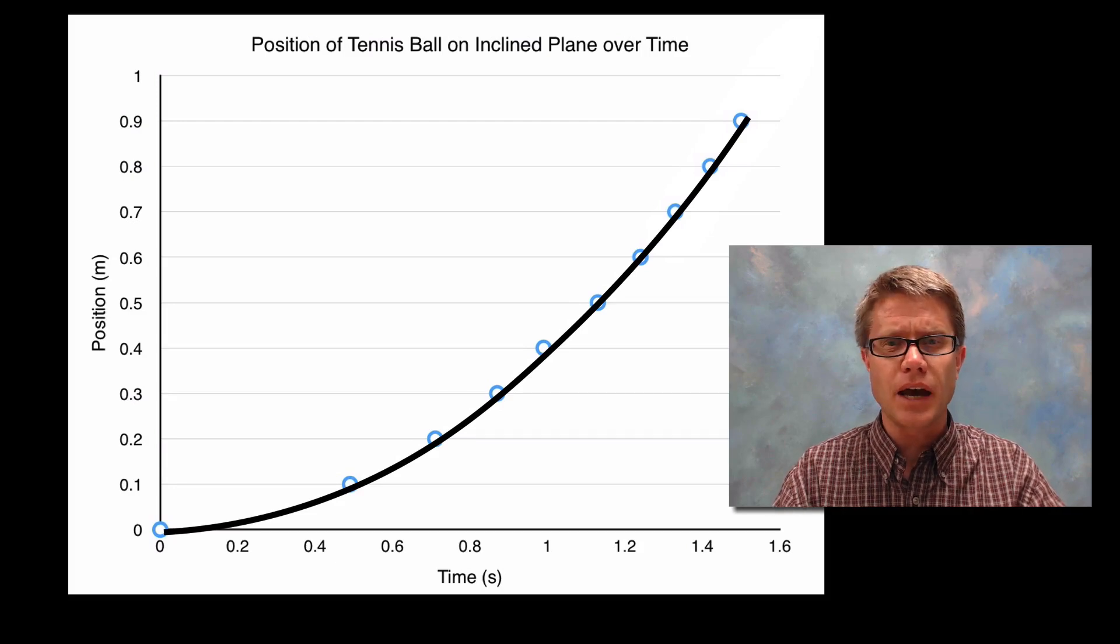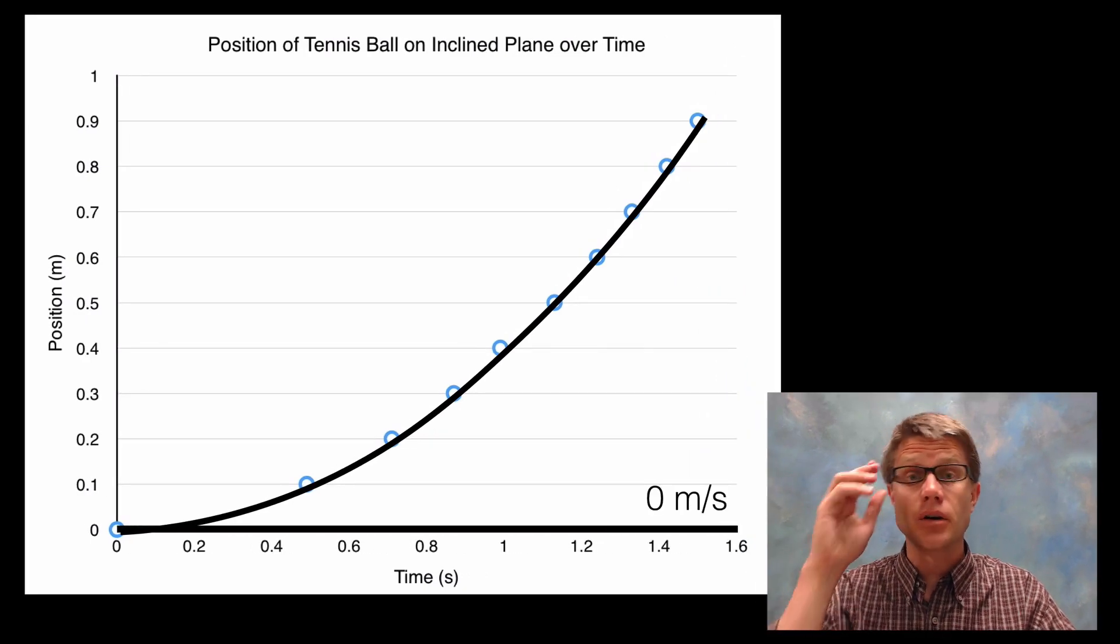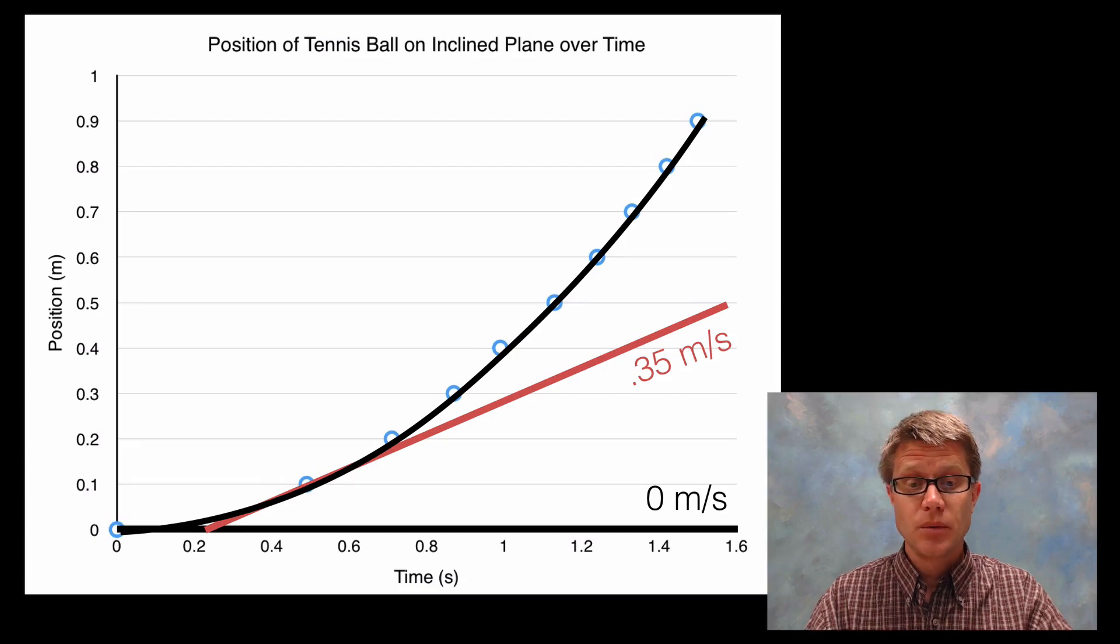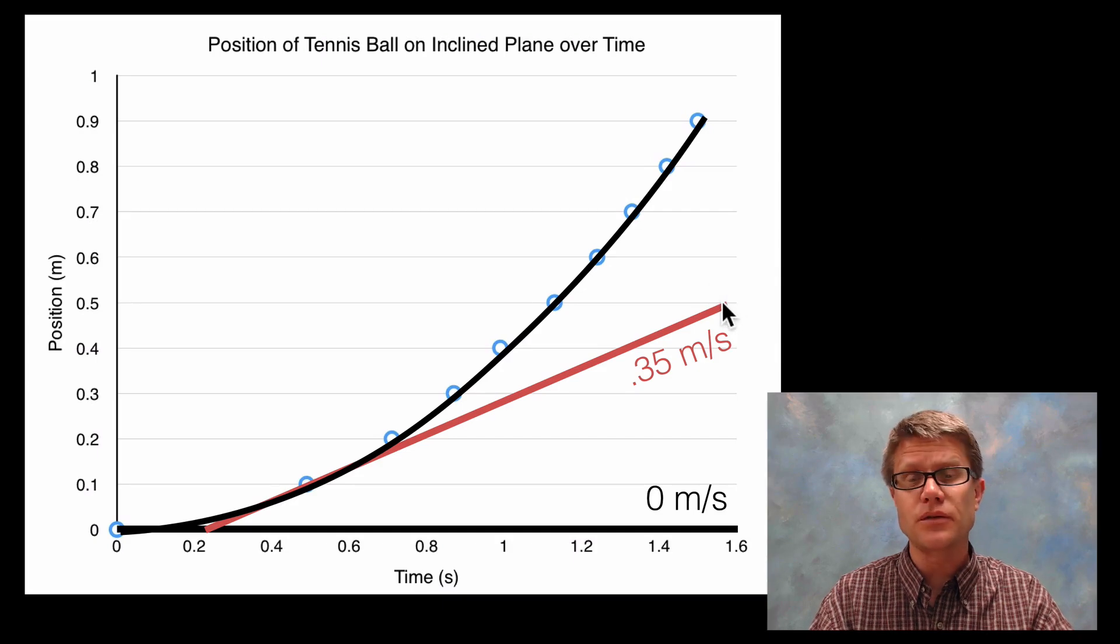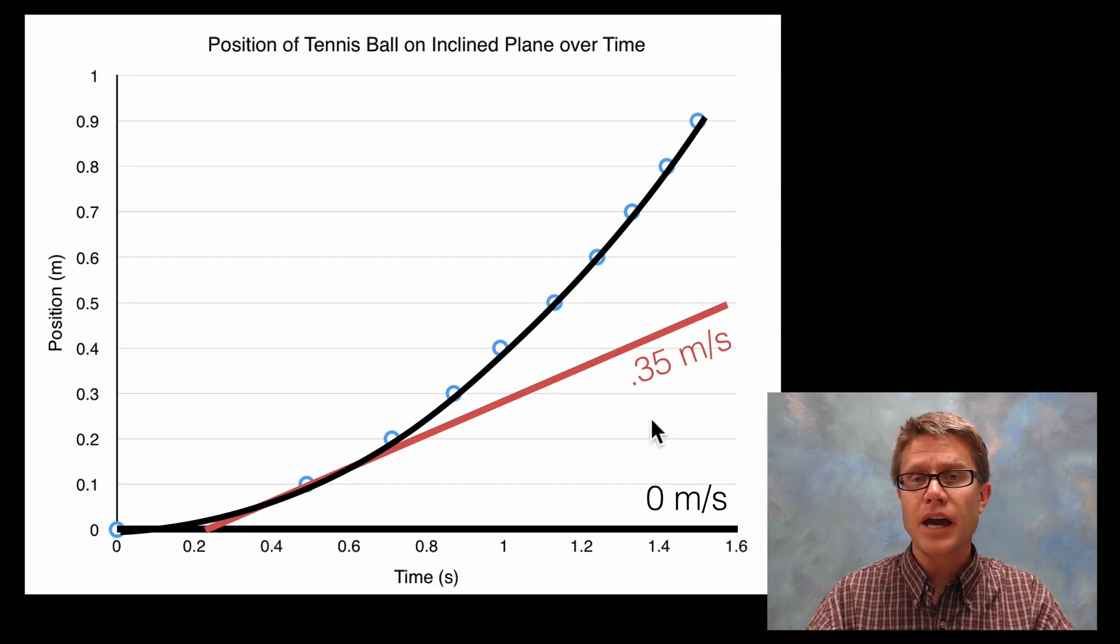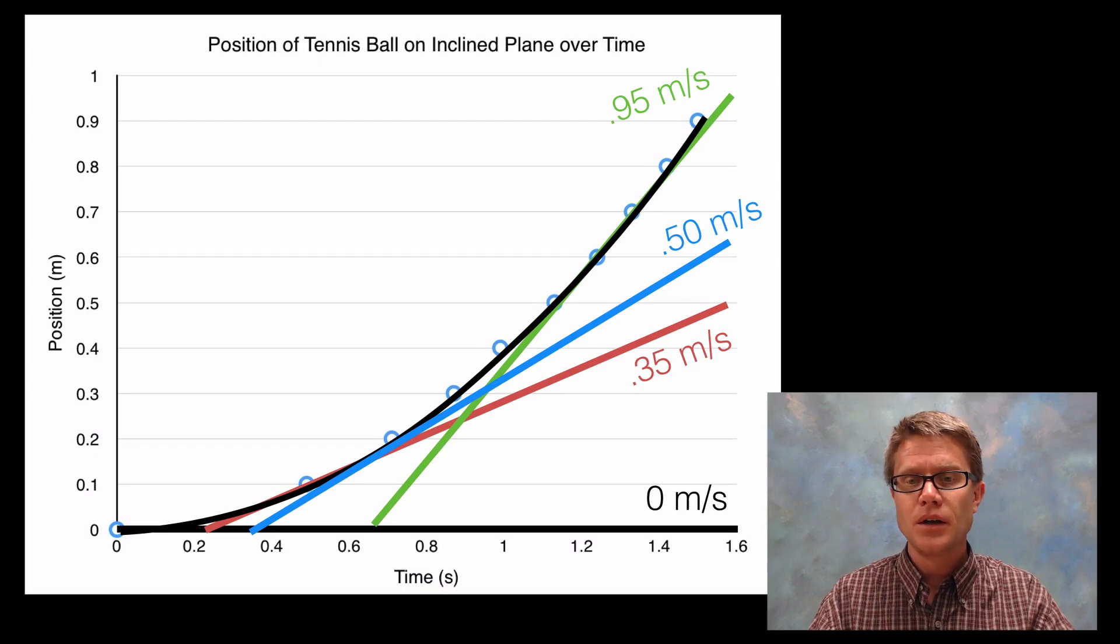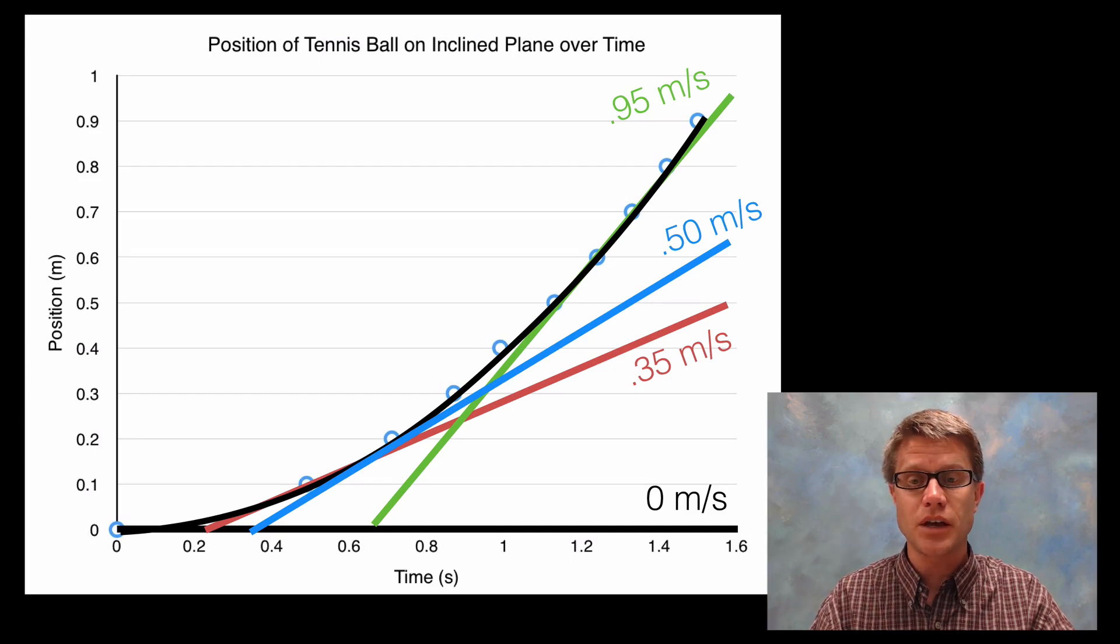I could also measure that by calculating the slope at each of those lines. At the beginning, the rise over run is zero meters per second - it's not going anywhere. If I put a line at position 0.1 meters, that's got a slope of about 0.35 meters per second. I find my rise of 0.5 meters over the run of around 1.4 seconds, getting 0.35 meters per second. At 1 second, I get a slope of around 0.95 meters per second. But as we look up here at these points, the velocity is not increasing over time, so we have constant velocity during that time.